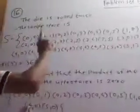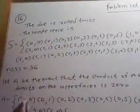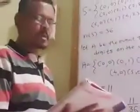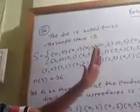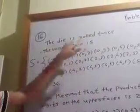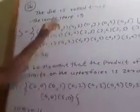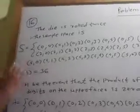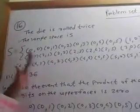We solve examples of dice, but their numbers are from 1 to 6. But this example's numbers are given from 0 to 5. The die is rolled twice, therefore the sample space is seen. Not 1 to 6, not 0 to 6, but 0 to 5.